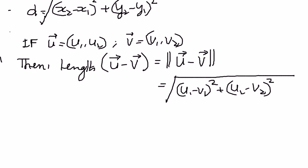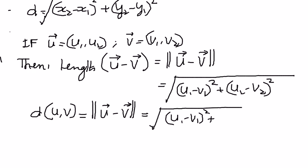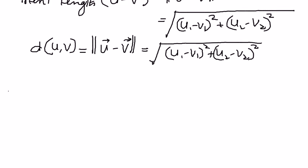The length of the vector is represented as d(u, v) — sometimes it is represented that way. It is also represented as the norm notation: vector u minus vector v with two parallel lines on either side, which is also the representation of the length of the vector. Therefore, we can write this as the square root of (u1 minus v1) squared plus (u2 minus v2) squared. That is how we find the length of a vector.